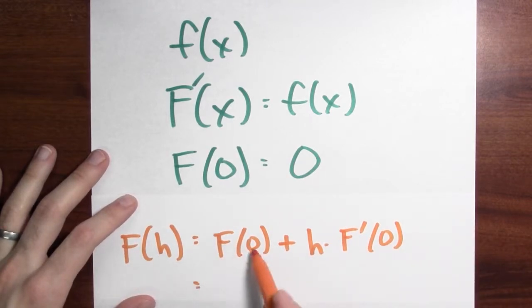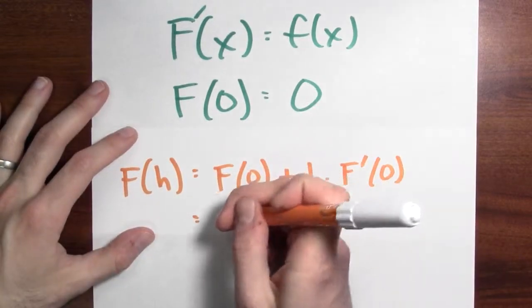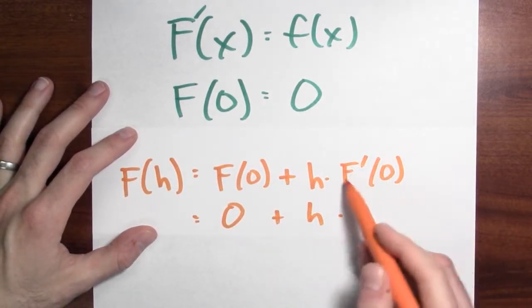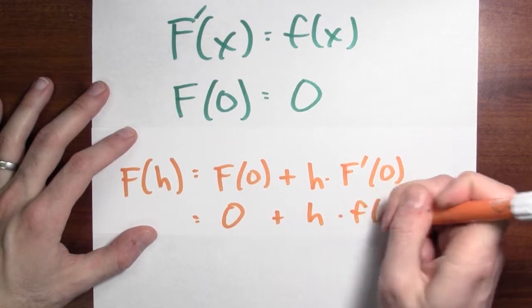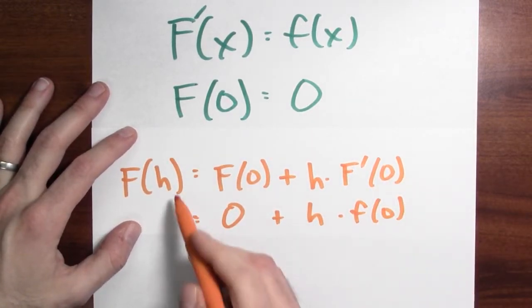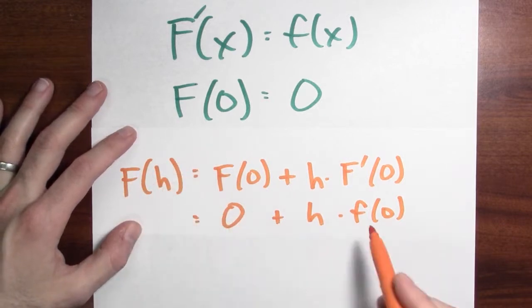Well, what is this? The value of big F at 0 is exactly equal to 0, and I got plus h times, and the derivative of big F is little f, so times little f at 0. So I can use this as my approximation for big F at h.